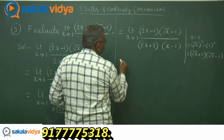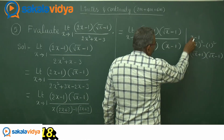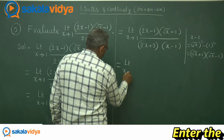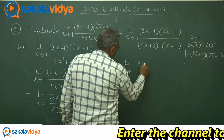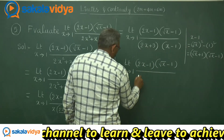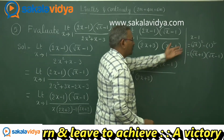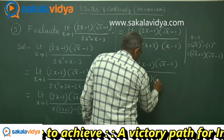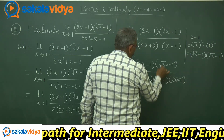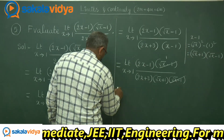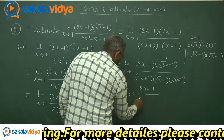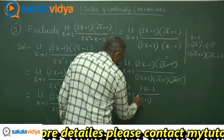Let us proceed. Instead of x minus 1 we write (√x plus 1)(√x minus 1). So this equals limit x tends to 1 of (2x minus 1)(√x minus 1) upon (2x plus 3)(√x plus 1)(√x minus 1). The (√x minus 1) terms cancel because they are common, leaving limit x tends to 1 of (2x minus 1) upon (2x plus 3)(√x plus 1).